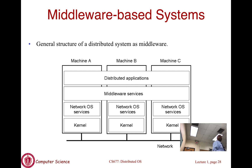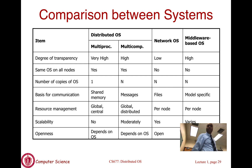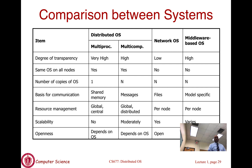So there are these three flavors that you should know about. There is a table which talks about the degree of transparency, which reduces as you go from a distributed OS to a network OS. There are many other characteristics which I am not going to go into here, but something you should go look at, and if something is not clear, come ask me. That is just to recap what we were doing last time.